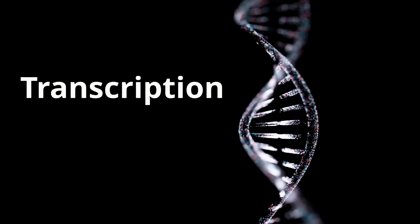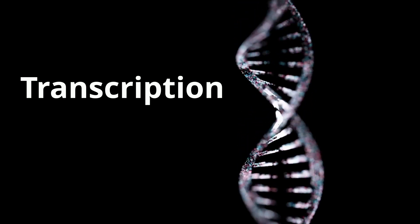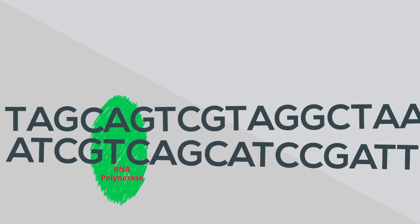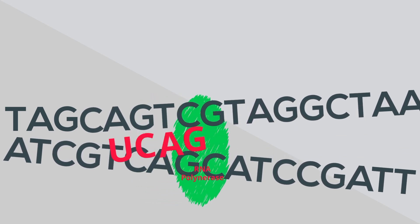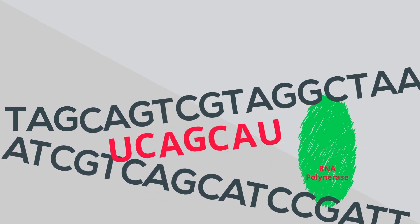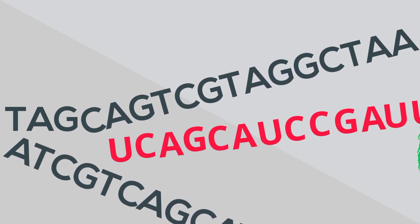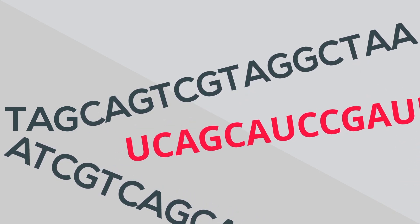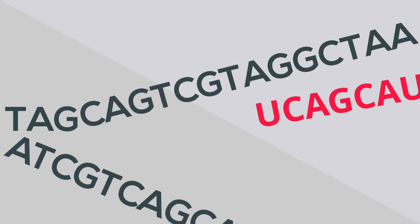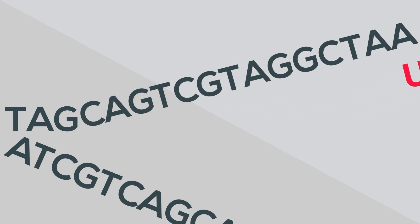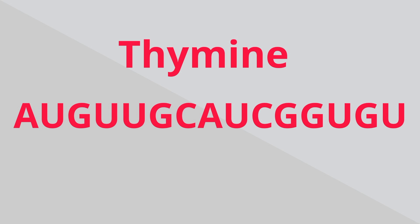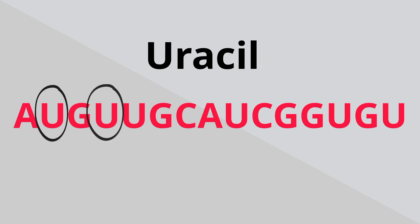So let's take a look at transcription. Transcription begins when RNA polymerase begins to unzip a portion of DNA. As it unzips, the four bases of RNA begin to make a strand of messenger RNA. The messenger RNA will detach from the DNA and travel outside of the nucleus. Notice that the four bases are the same as DNA for RNA except thymine is replaced with uracil.